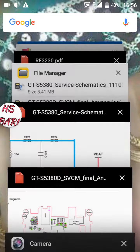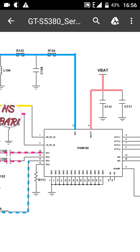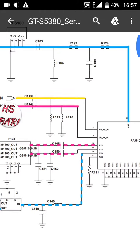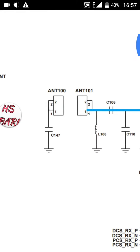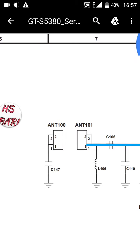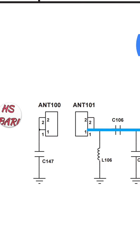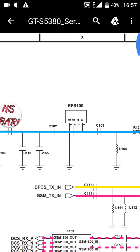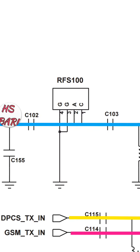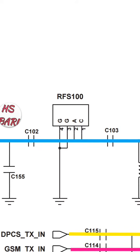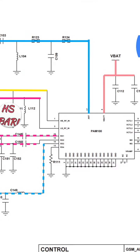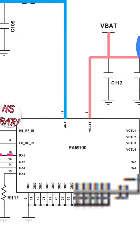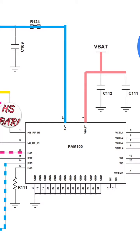I have a service schematic diagram of a Samsung mobile phone GT-S5380. You can see ANT100 and ANT101 — these are the two antenna connecting points which we have already seen on the PCB. The blue color line runs toward the right-hand side and you can see RFS100, which is the external antenna connecting point.